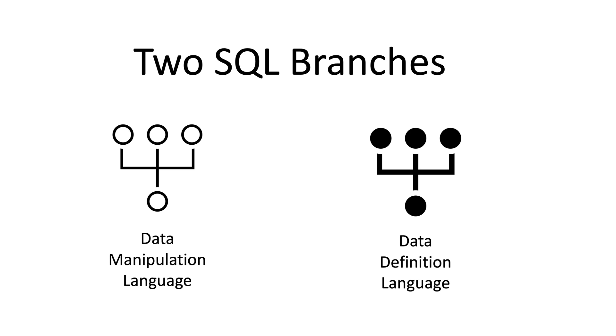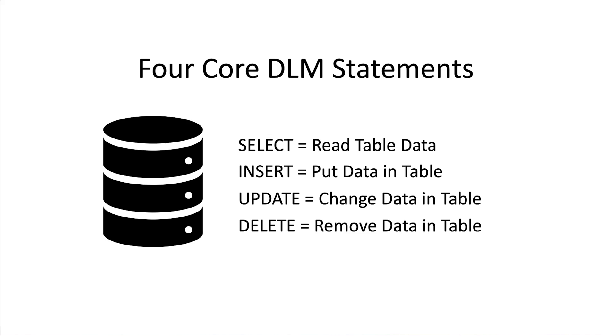The first branch is DML. DML is an acronym that stands for Data Manipulation Language. DDL is an acronym that stands for Data Definition Language. DML is used to work with data and tables. There are four core DML statements: select, insert, update, and delete.